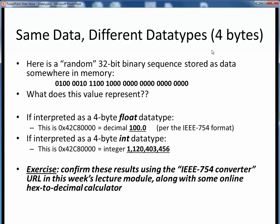Here's another example. Suppose now we've got the indicated 32-bit sequence of data stored somewhere else in memory. What data does this bit sequence represent? Once again, the answer is, it depends upon the data type being used to store it. If these 32 bits are stored using the 4-byte float data type, this data represents the decimal value 100.0, according to the IEEE 754 format.